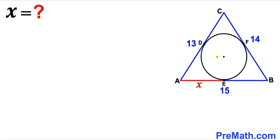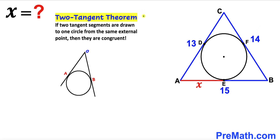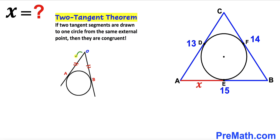Let's get started. Since we are dealing with a scalene triangle — in other words, all side lengths are different — let's recall the two tangents theorem: if two tangent segments are drawn to one circle from the same external point, then they are congruent. For example, tangents OA and OB drawn from external point O satisfy OA = OB.